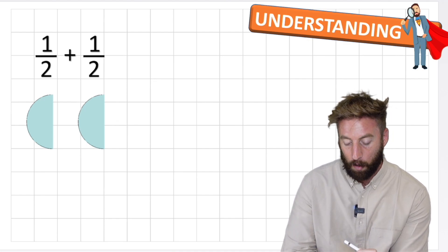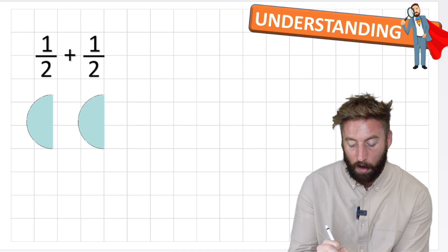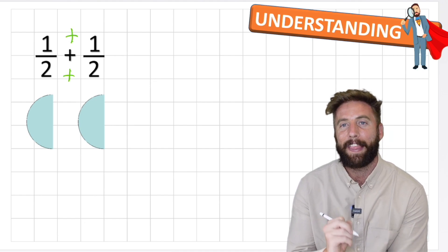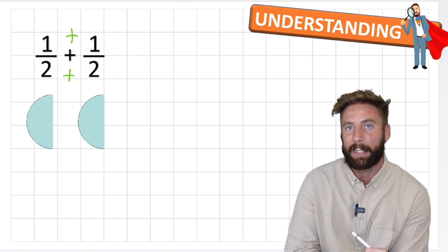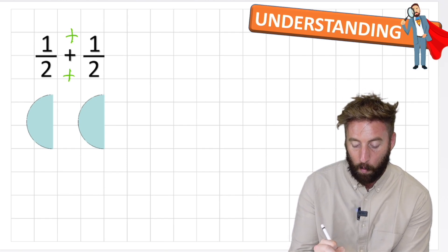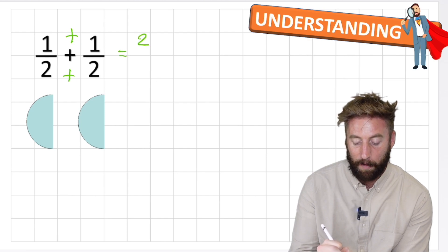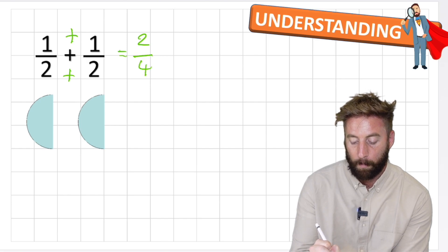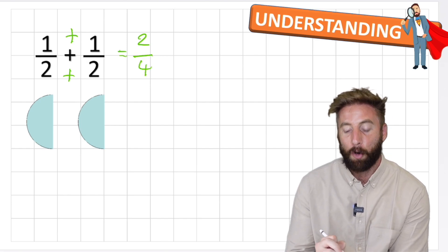So first thing we might think of doing is we might try to add our numerator and our denominator, and this is the most common mistake I see. Let's see what happens if we do that. If I add my numerator I'll get one add one equals two, and if I add my denominators two and two I will equal four. Well if I now show that in my model again, two fourths or two quarters,